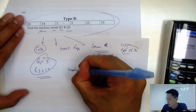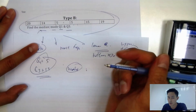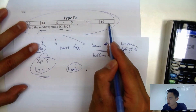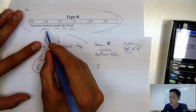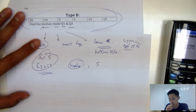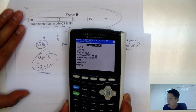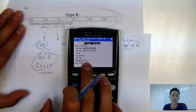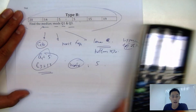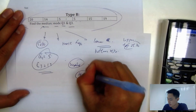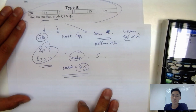For the mode, just look at the numbers — 5 appears two times, so the mode is 5. For the median, the calculator already shows it for you: the median is 14.5. You don't need to calculate it by hand.